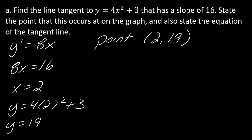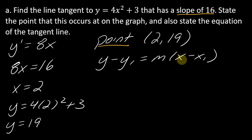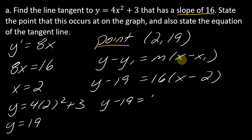Now let's find the tangent line. The whole thing about a tangent line is that you need a slope and a point. Here's my point: (2, 19). My slope was given to me — it's 16. So we have everything we need. Using point-slope form, this is going to be y minus 19 equals 16 times x minus 2. Putting that into slope-intercept form: y minus 19 equals 16x minus 32.